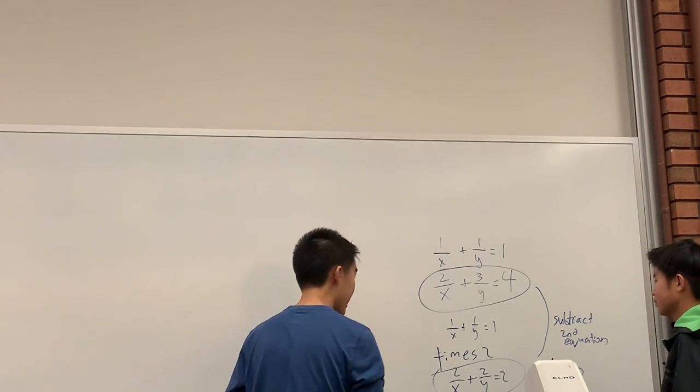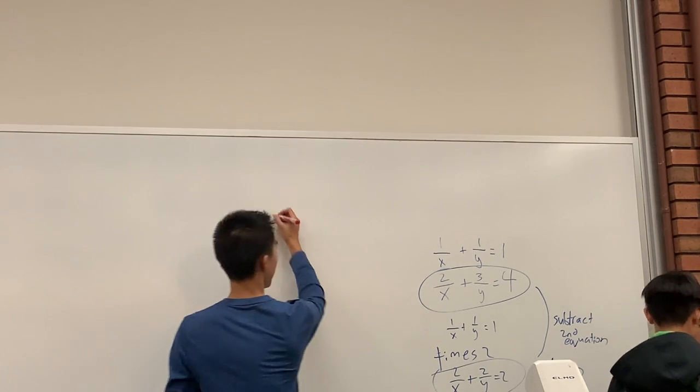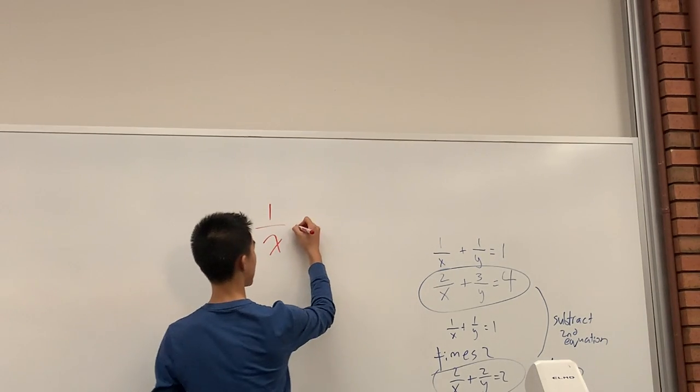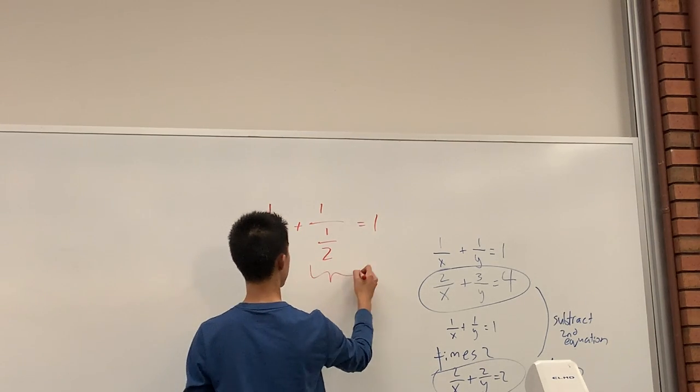So we get, alright, you can plug back a lot. Alright, cool. So what we get now is 1 over x plus 1 over 1 over 2 equals 1, and this is just 2.